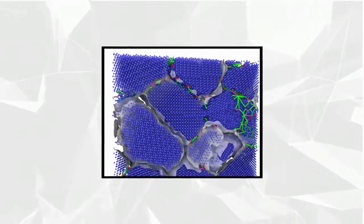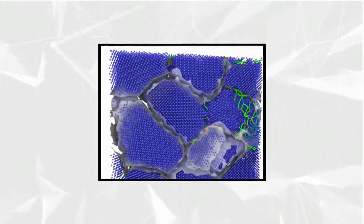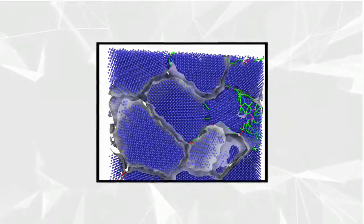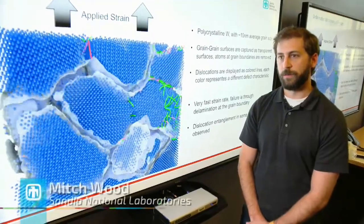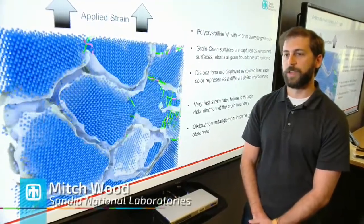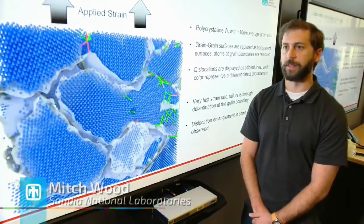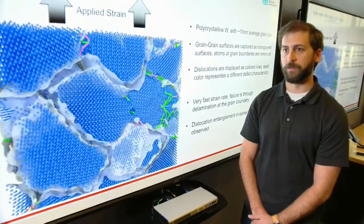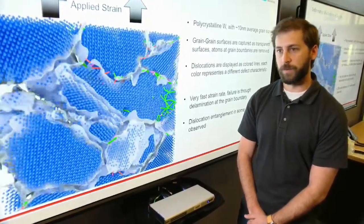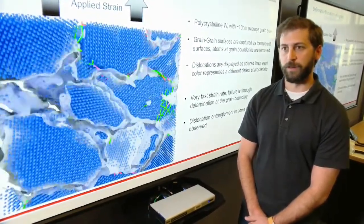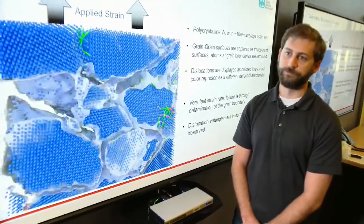We're looking at an all-atom simulation of a material failing. It's not intuitive to understand how a material fails, so something like LAMPS allows us to study in great detail what those failure mechanisms look like in a real material.